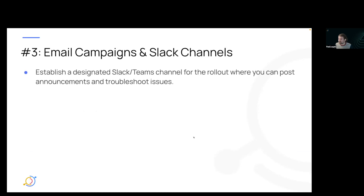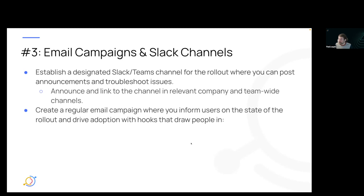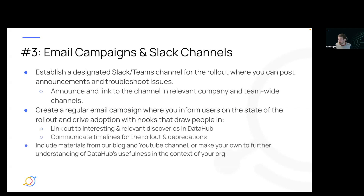Third: email campaigns and Slack channels. Establish a designated Slack or Teams channel for the rollout where you can announce things. Link the channel in relevant company and team-wide channels. Create a regular email campaign where you inform users on the state of your rollout and drive adoption with hooks like quotes from your champions, links to interesting discoveries within your Data Hub instance, and communications on rollout or deprecations. Include educational materials from the Data Hub blog or YouTube, and use quotes from power users to speak to personas and value adds.